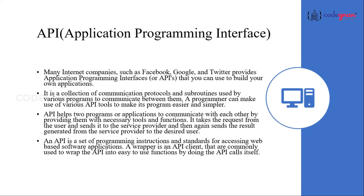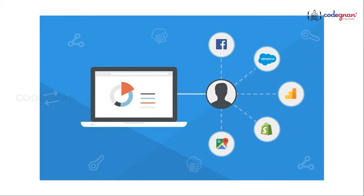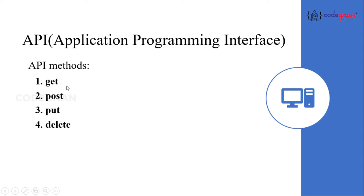API provides a layer of security — your phone data is never fully exposed to the server. Instead, they communicate with small packets of data. We mainly have four operations called CRUD operations: Create, Read, Update, Delete. When working on a database, you create a table, write data, update it, and delete it. These map to four HTTP methods: GET, POST, PUT, DELETE — the main methods in an API.